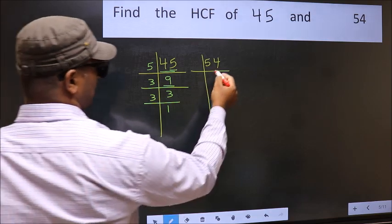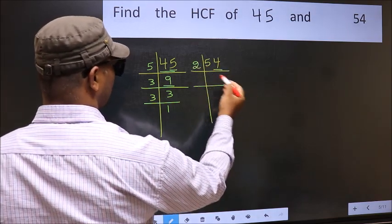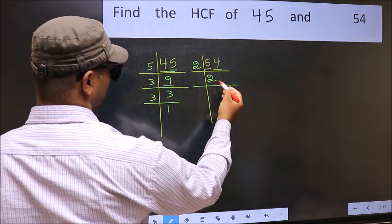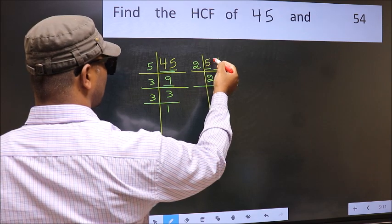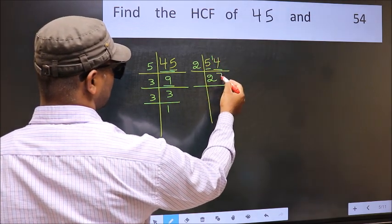Now the other number. Last digit 4, even, so take 2. First number 5. A number close to 5 in the 2 table is 2×2 is 4. 5 minus 4 is 1, 1 carried forward is 14. When do we get 14 in the 2 table? 2 sevens is 14.